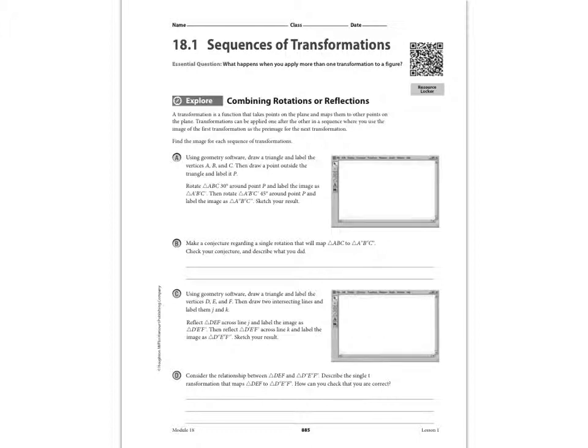In this lesson, we're just going to be combining the transformations that we learned in the previous module, Module 17. That is specifically the translations, rotations, and reflections. If you're not comfortable with any of those three, you want to go back and review those because that will be required for you to do the transformations in this lesson.